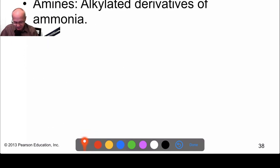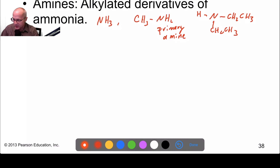Nitrogen containing. Amines. Alkylated derivatives of ammonia. Ammonia, NH3. So, CH3, NH2. It's an amine. It's called a primary amine. NCH2, CH3, CH2, CH3. That's an amine. It's a secondary amine. And there's also a tertiary amine.